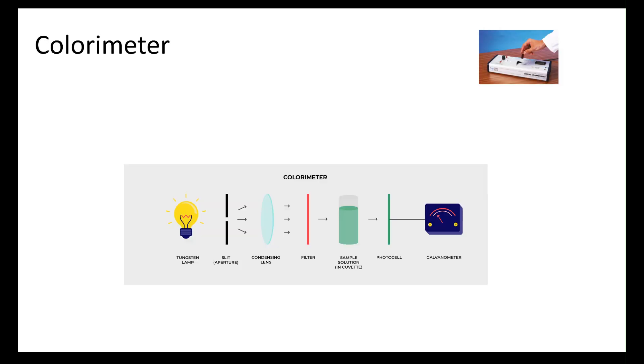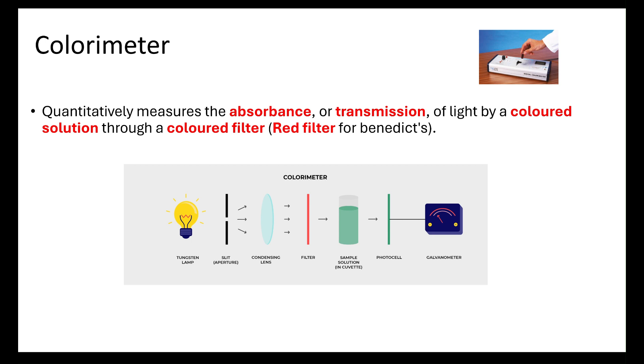When we talk about quantitative data, we're not just talking about the color that we see. We want to turn this into a numerical value, and we do that through using a colorimeter. Quantitative measures the absorbance or transmission of light by a colored solution. With the Benedict going from blue through to brick red, that is where we're going to be using light being transmitted through or absorbed by the pigment in our solution.